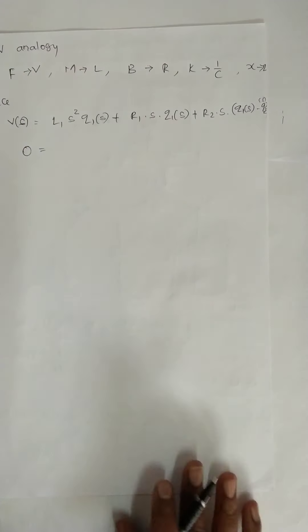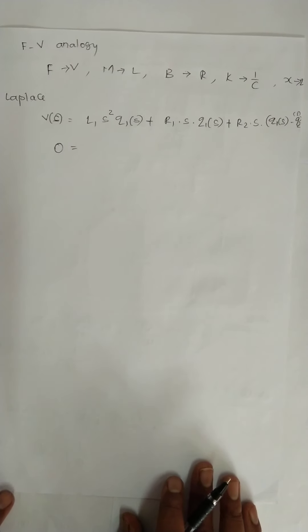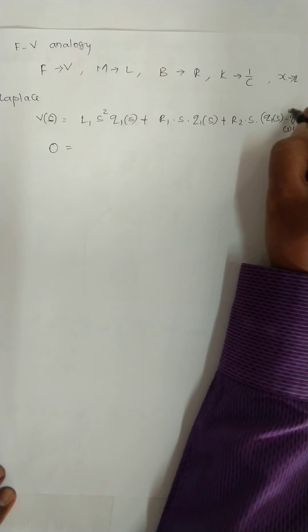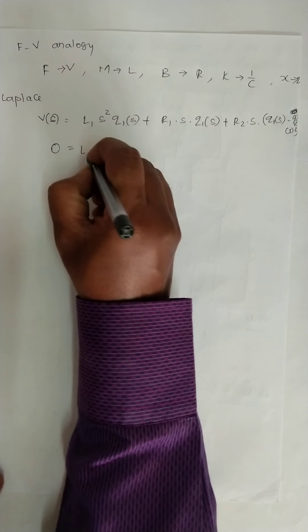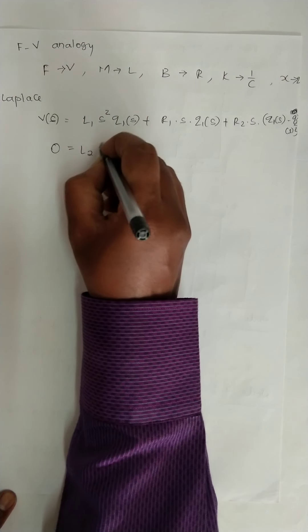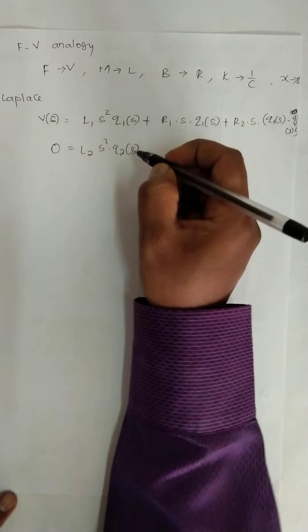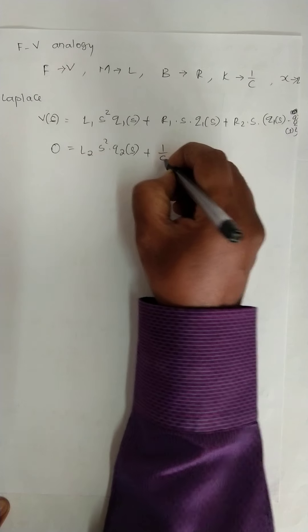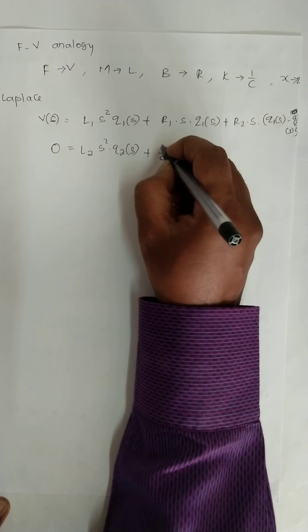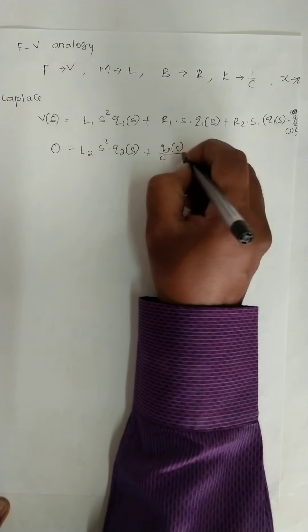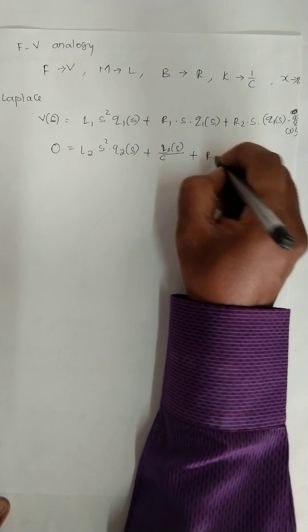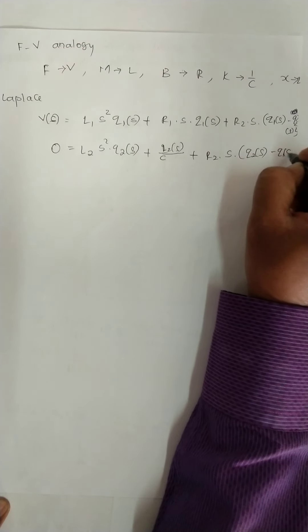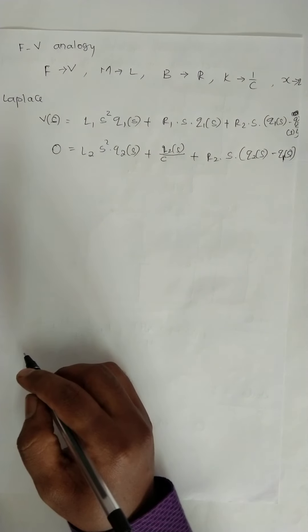Similarly, 0 is equal to L2 s² Q2(s) plus 1/C Q2(s) plus R2 s (Q2(s) - Q1(s)).